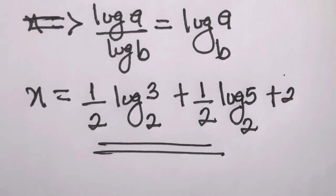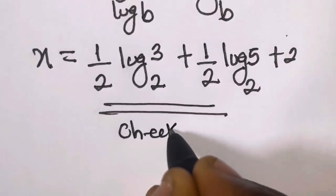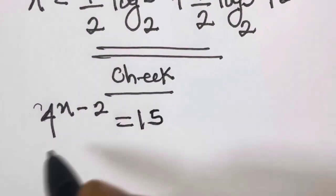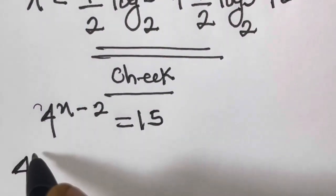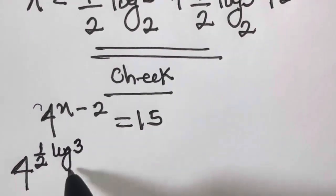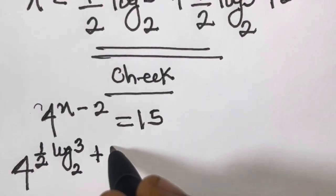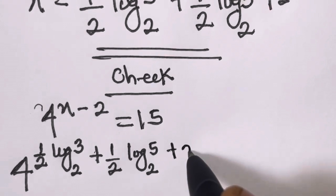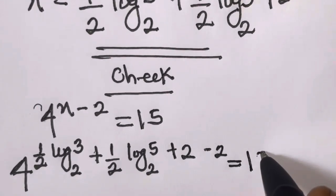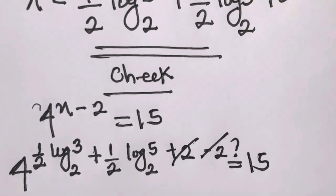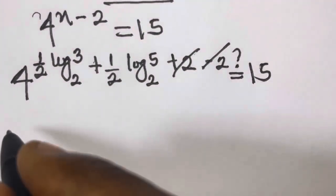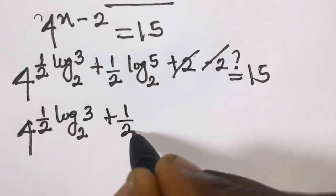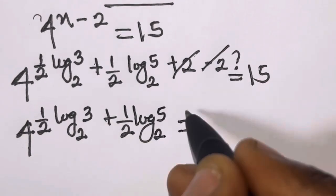You can easily verify this. Let's check: we have 4 raised to the power x, where x is 1/2 log 3 in base 2 plus 1/2 log 5 in base 2 plus 2, minus 2 equals 15. The plus 2 and minus 2 cancel, so we have 4 raised to the power 1/2 log 3 in base 2 plus 1/2 log 5 in base 2 — is this equal to 15?